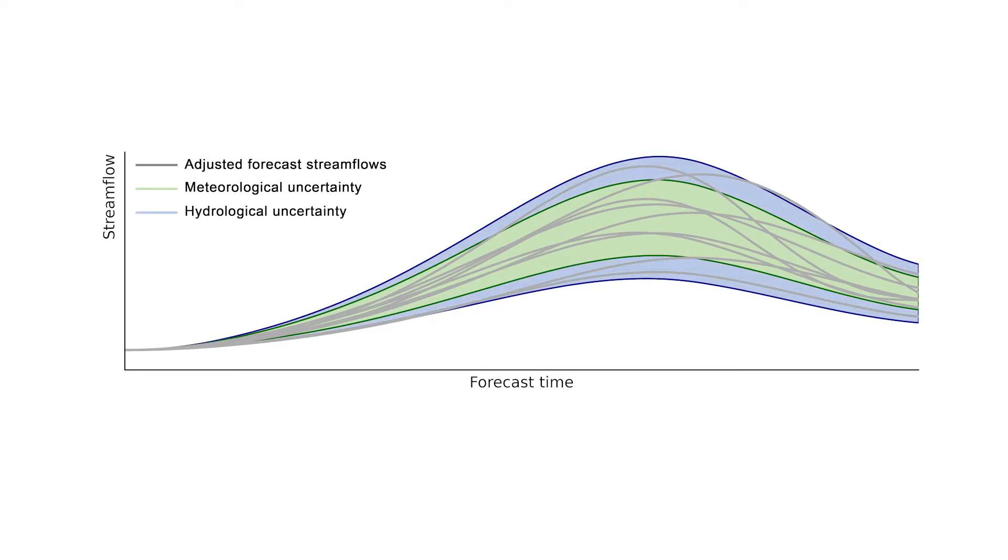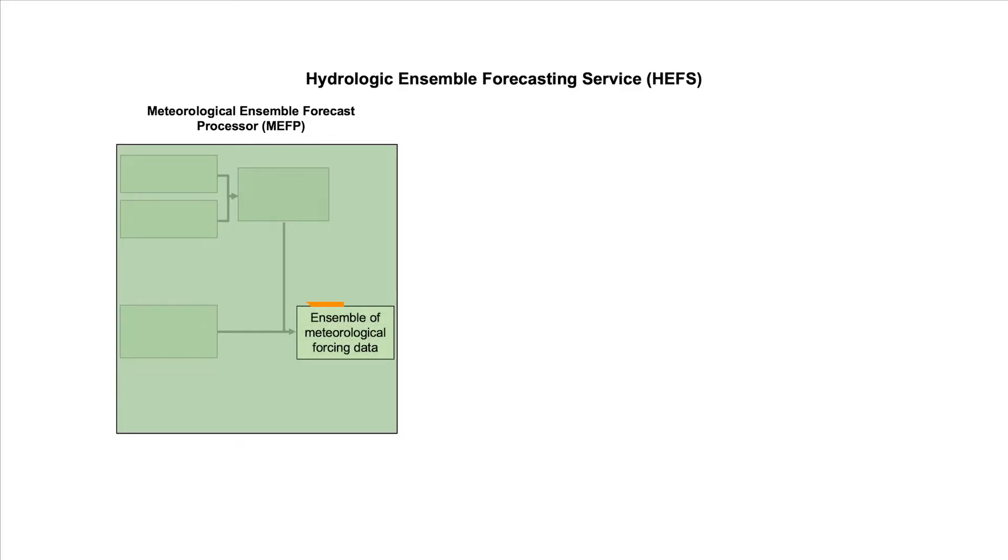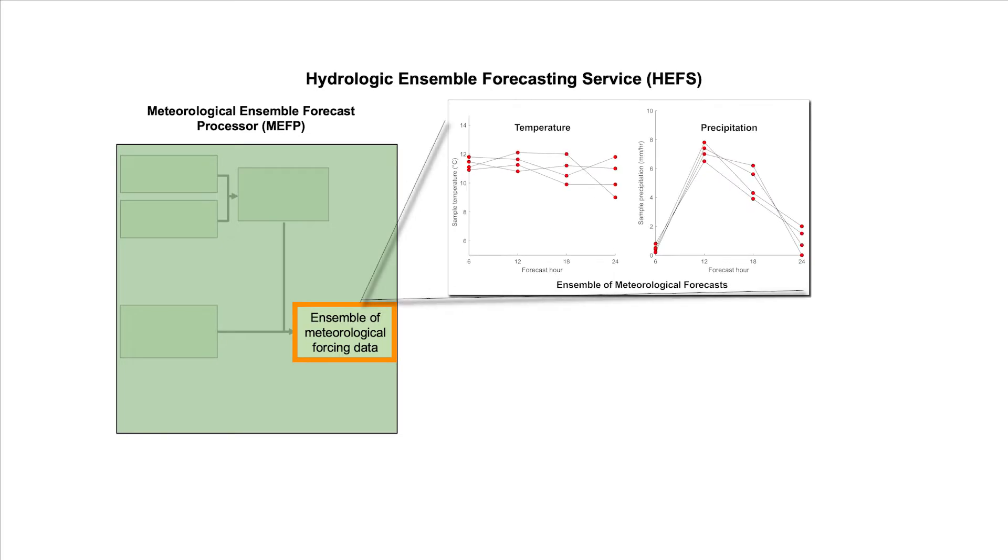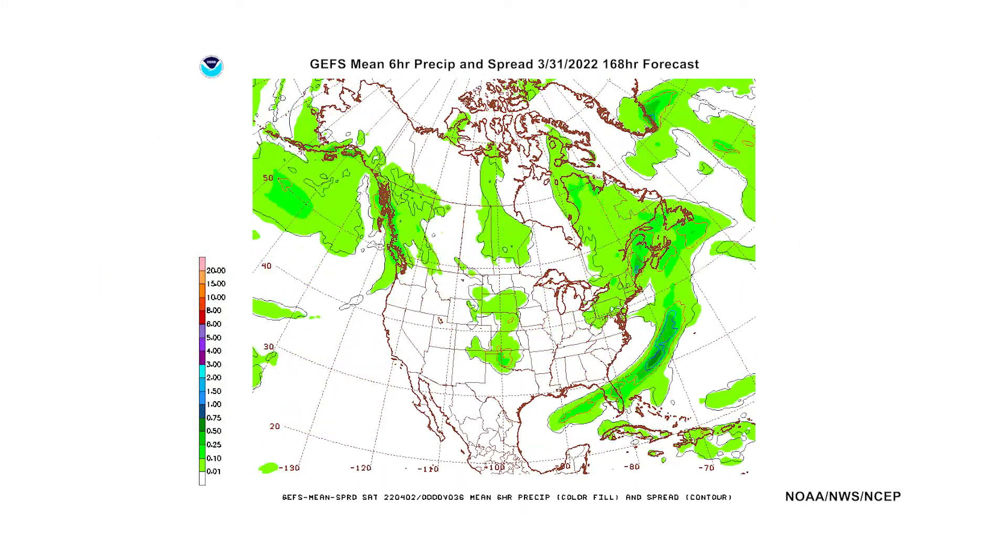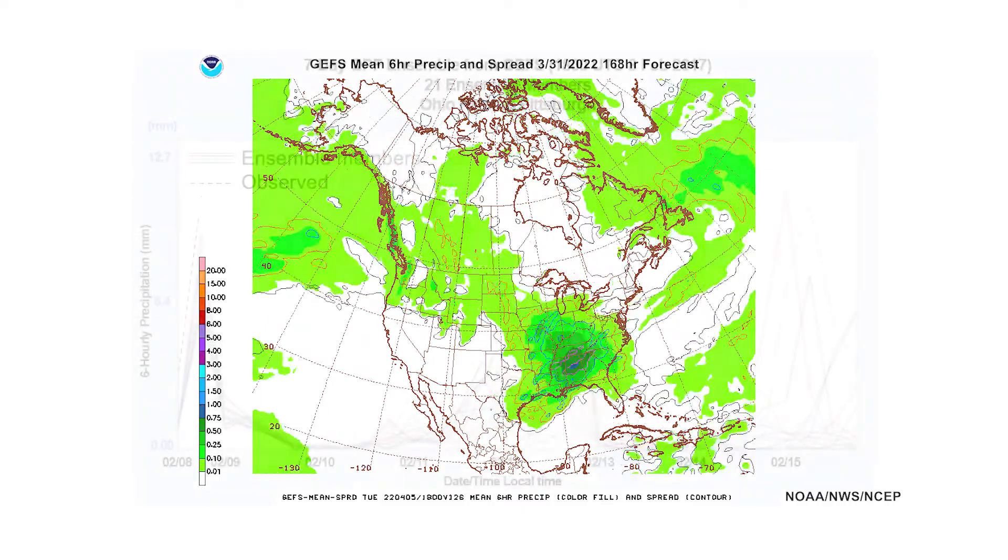The Meteorological Ensemble Forecast Processor, or MEFP, is the first step in HEFS. It creates an ensemble of meteorological forecasts used as inputs to the hydrological model. The MEFP can use meteorological forecasts from a variety of sources, such as the Global Ensemble Forecast System, or GEFS.